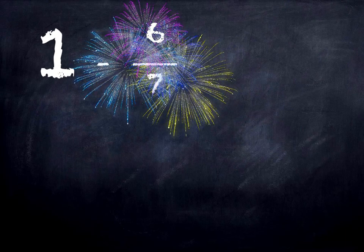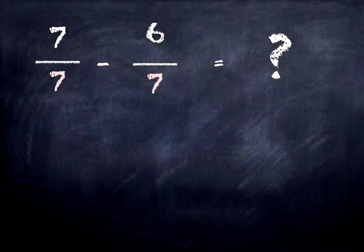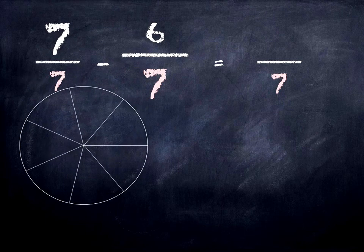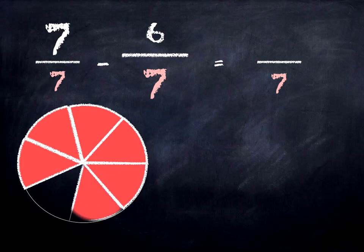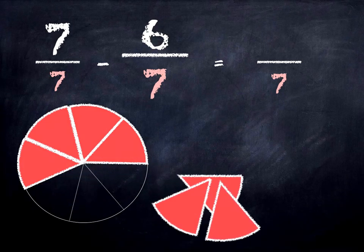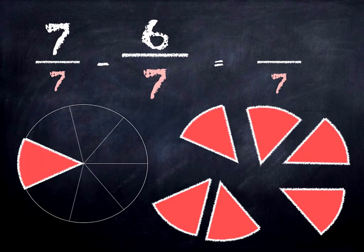Let's look at another problem: 1 take away 6 sevenths is what? We know that 1 is the same as 7 sevenths — 7 sevenths in a whole, and our answer will be in sevenths. So there's our whole, chopped into 7 equal pieces, and we're going to take 6 of them away. What do we have left? We have 1 seventh.